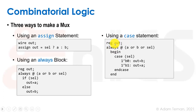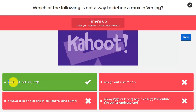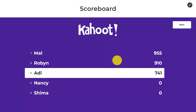We could also use a case statement inside this always block. Again, out is type reg since it's on the left-hand side. We write always at a or b or cell with begin/end, then case on cell: if cell is 0, out equals b; if cell is 1, out equals a. Those are three different ways to make a mux. In the Kahoot I also gave 'mux out cell in1 in2' as a primitive-style answer, but there is no mux primitive in Verilog — so that was the fake answer.